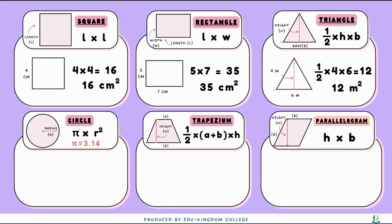For this triangle, the height is 4 meters and the base is 6 meters. So following the formula, we have a half times 4 times 6, which gives us 12. Since the units are in meters, the area is going to be 12 meters squared.